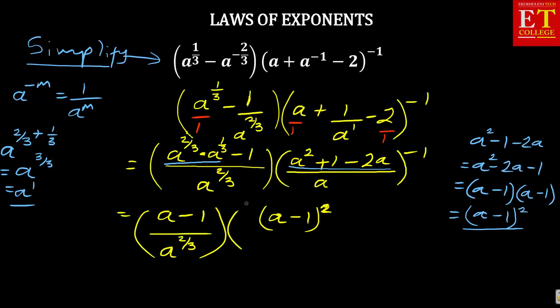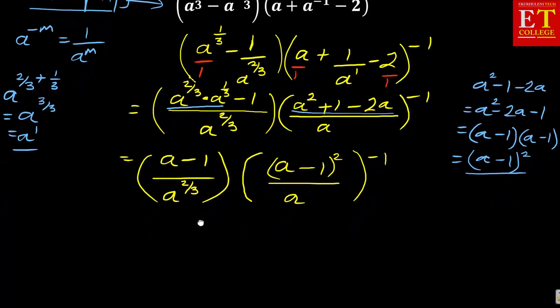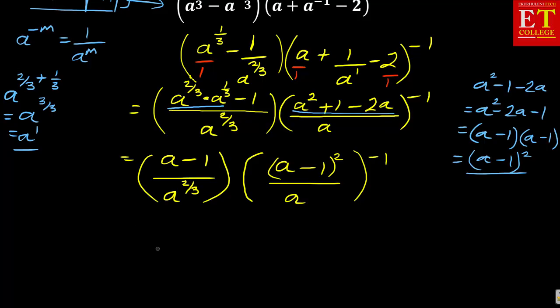which is same as a minus 1 squared. If you factorize, that's what you're going to get. In this case, you are having a minus 1 squared, but it's inside the bracket. I can put it like this. What I'm having on top is a minus 1 squared over a, everything to the power negative 1.